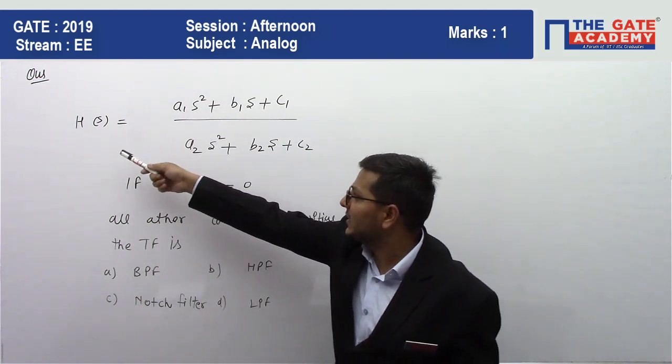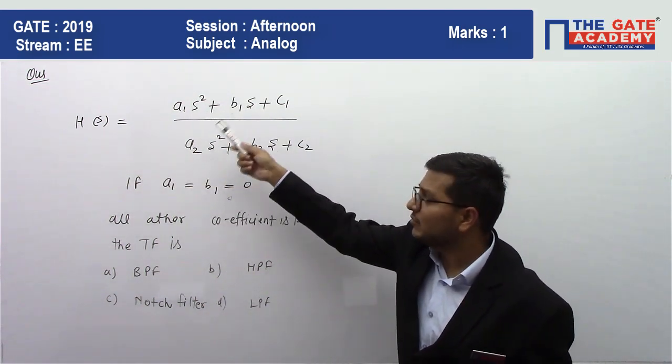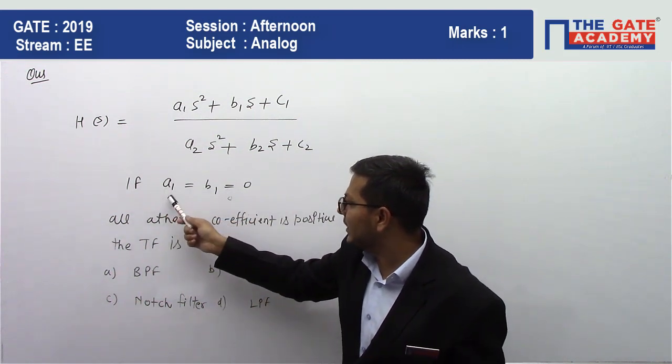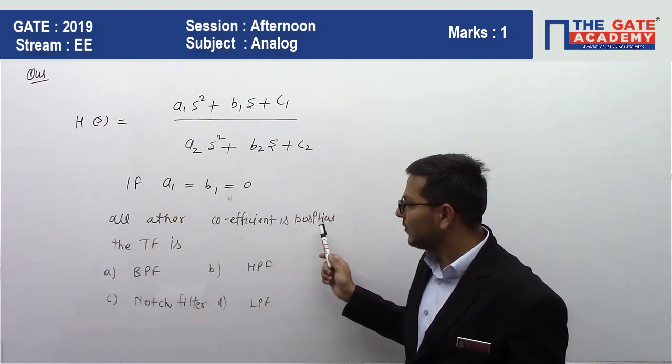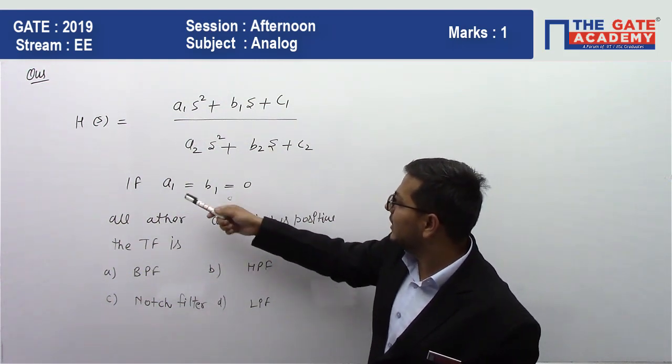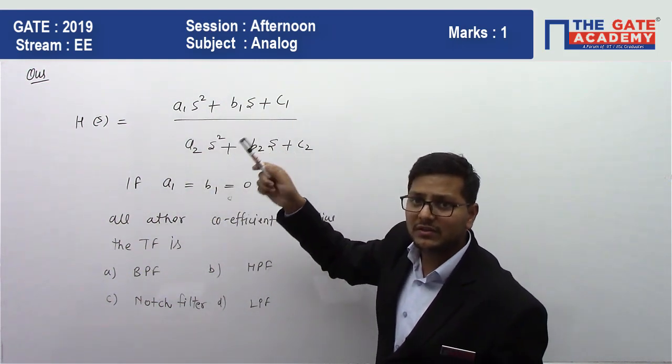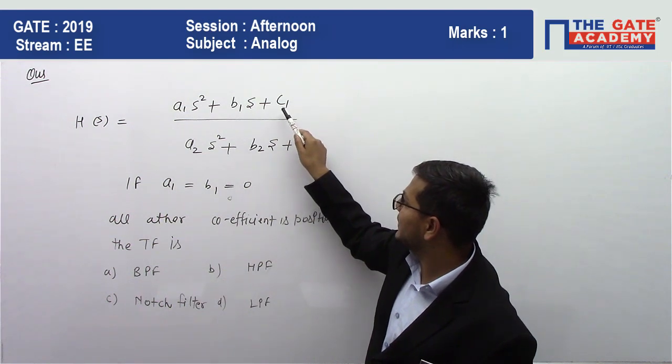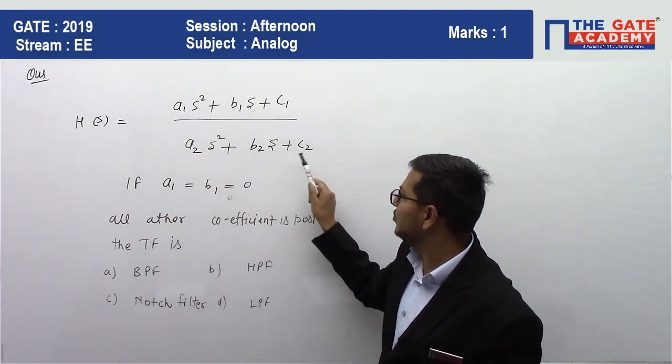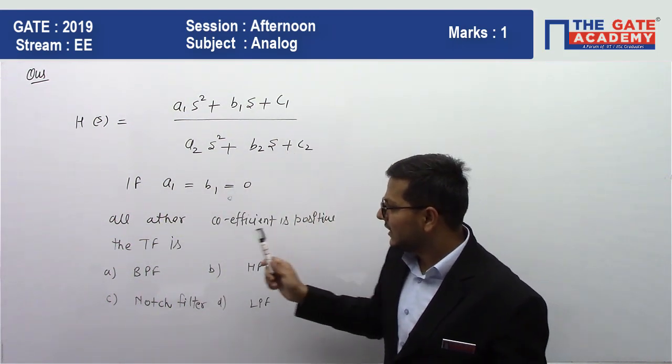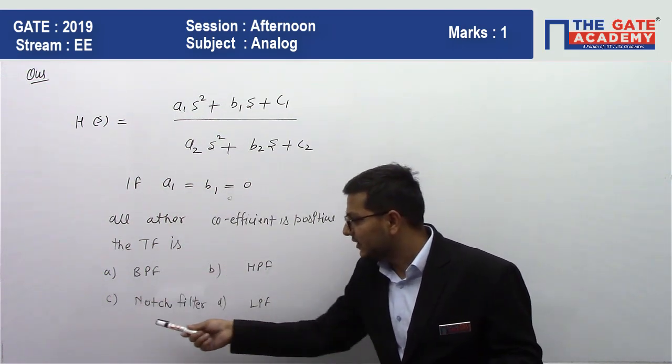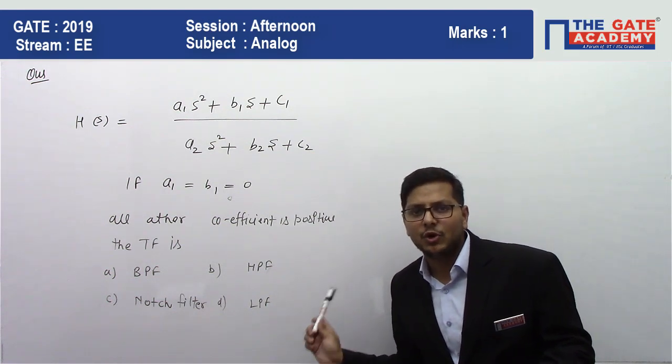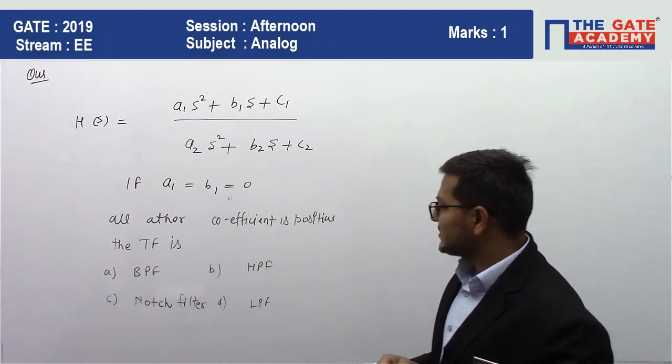The question is: a transfer function is given, H(s) equals something, and if a1 and b1 equal zero, in that case all other coefficients are positive. It means the value of a1 and b1 is zero and other coefficients—c1, a2, b2, c2—are positive. They ask about whether the transfer function is a band pass filter, high pass filter, notch filter, or low pass filter.